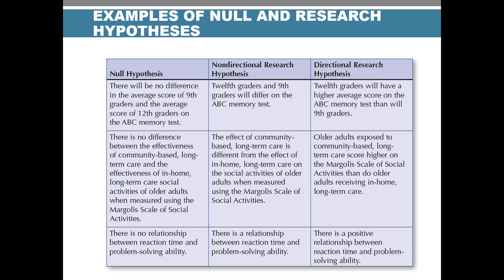Here are some examples. The null hypothesis is: 'There is no difference in the average score of 9th graders and 12th graders on the memory test.' Non-directional alternative: 'There will be a difference between 12th graders and 9th graders.' Directional alternative: '12th graders will have a higher score than 9th graders on the test.' There are different ways to phrase a hypothesis depending on what you expect to find.